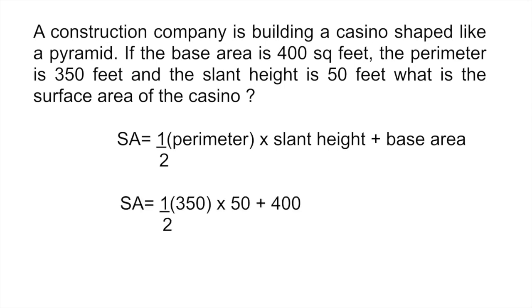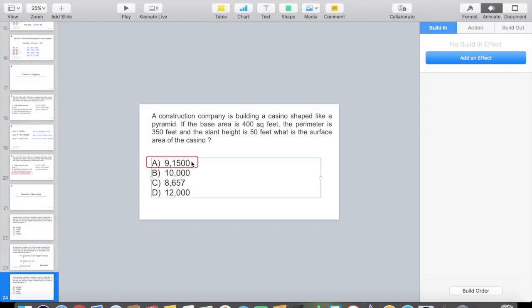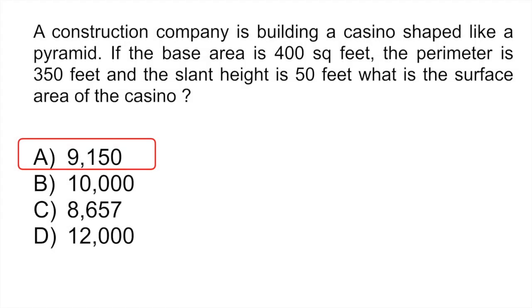So here, what you would do is just plug in those numbers that they give you in the question. So the perimeter was 350. So the correct answer would be 9,150. Okay. There's an extra zero there. I apologize. So correct answer would be A. I'm just going to fix that right now. The correct answer would be A, which we said was 9,150.